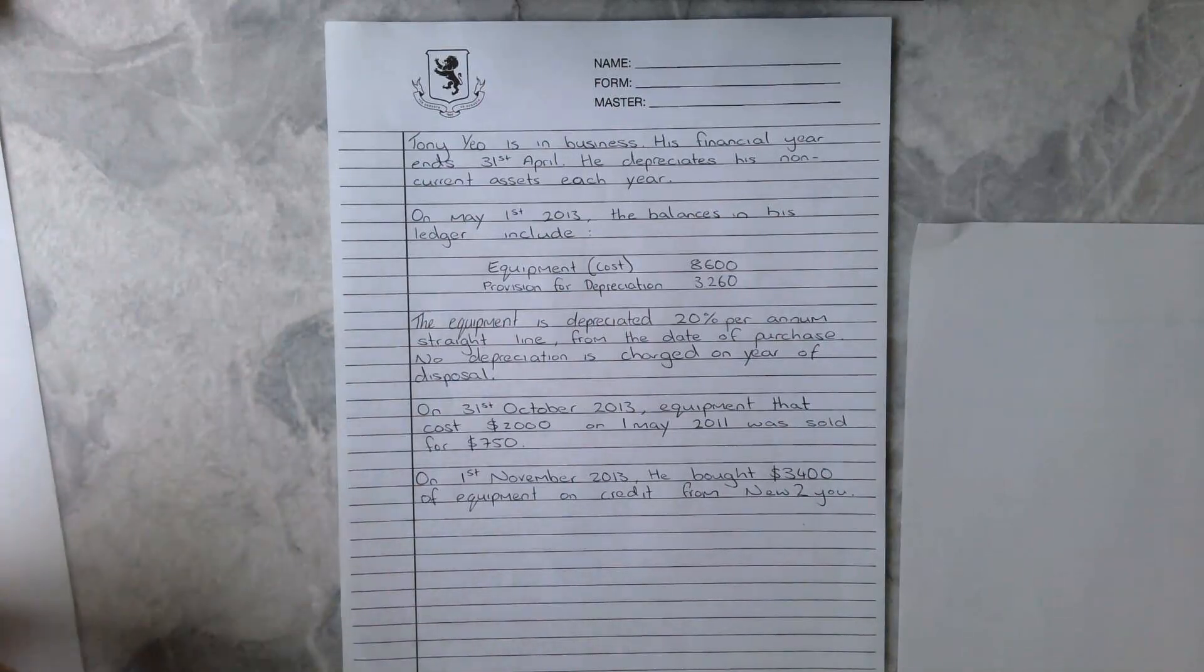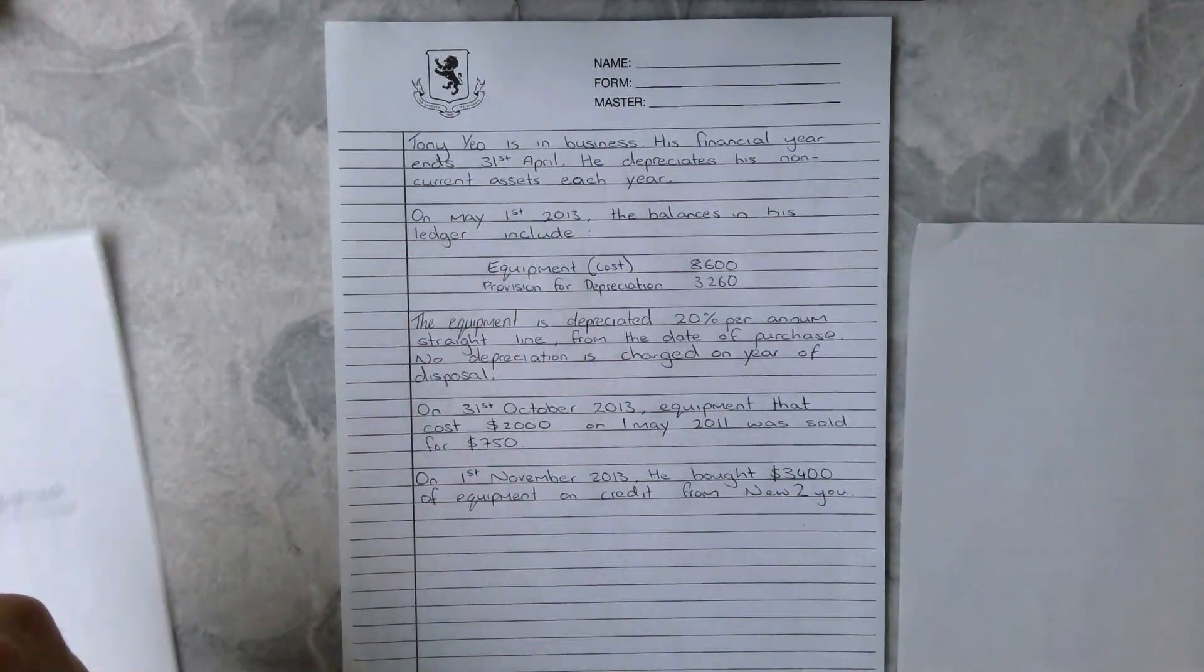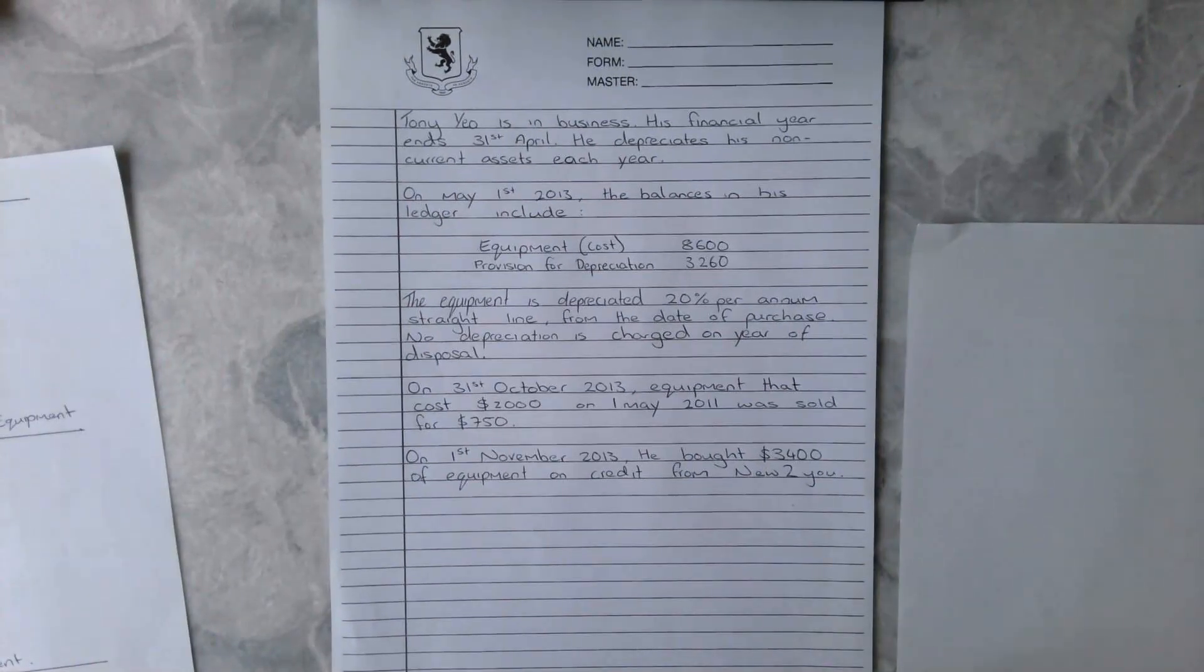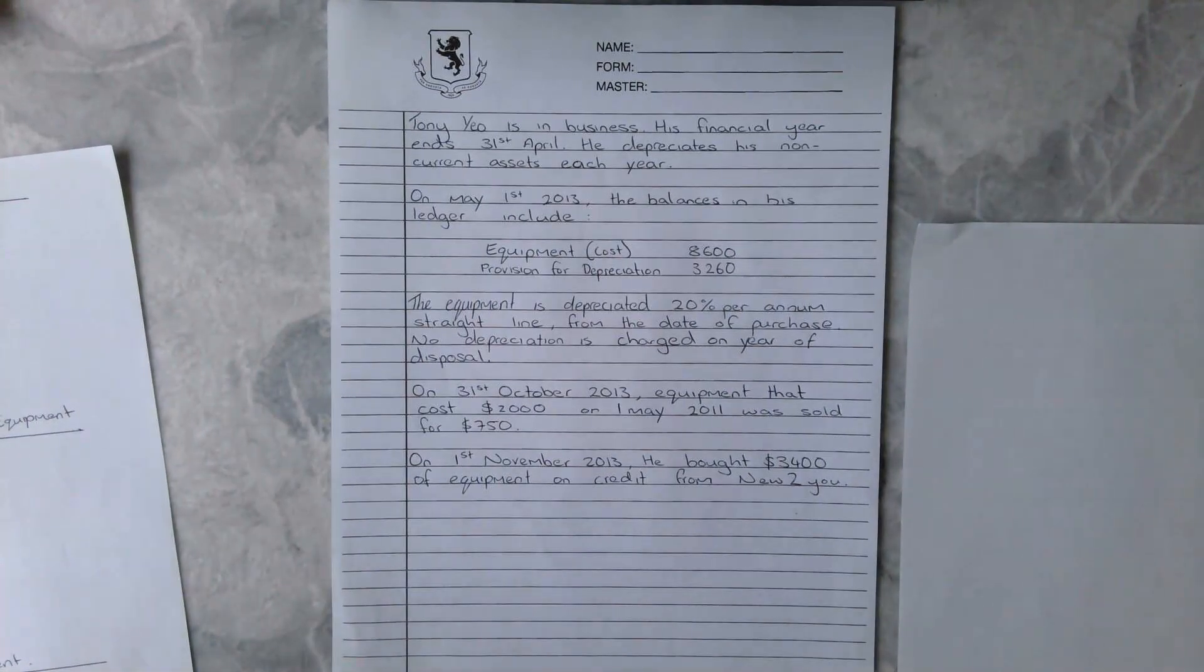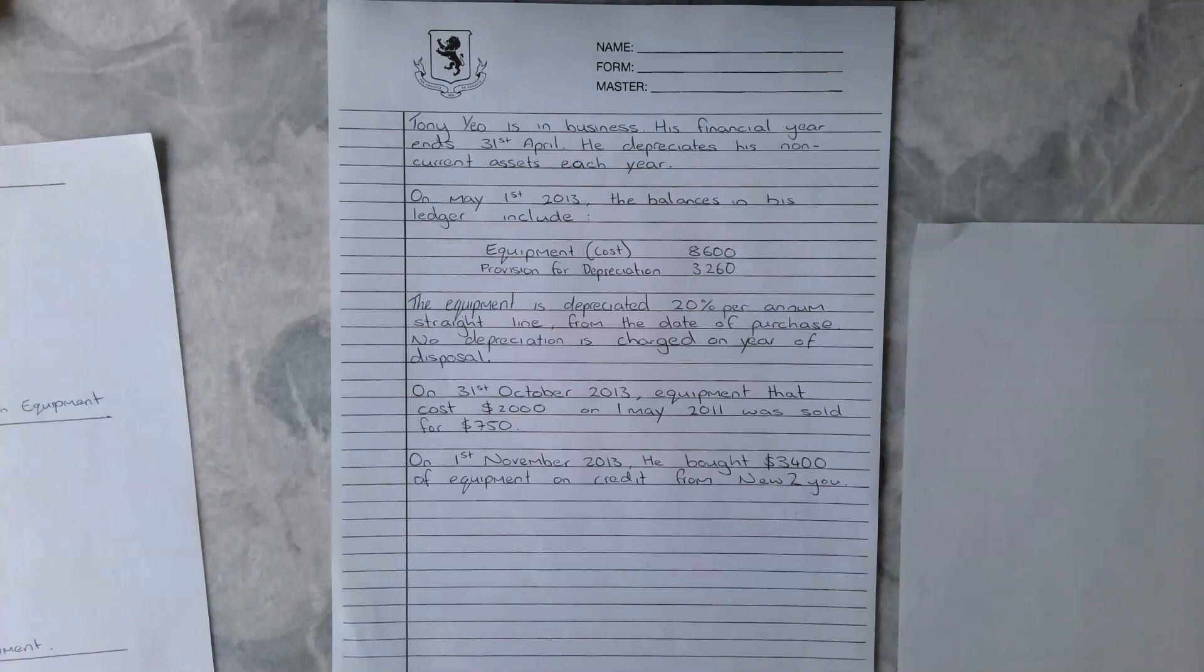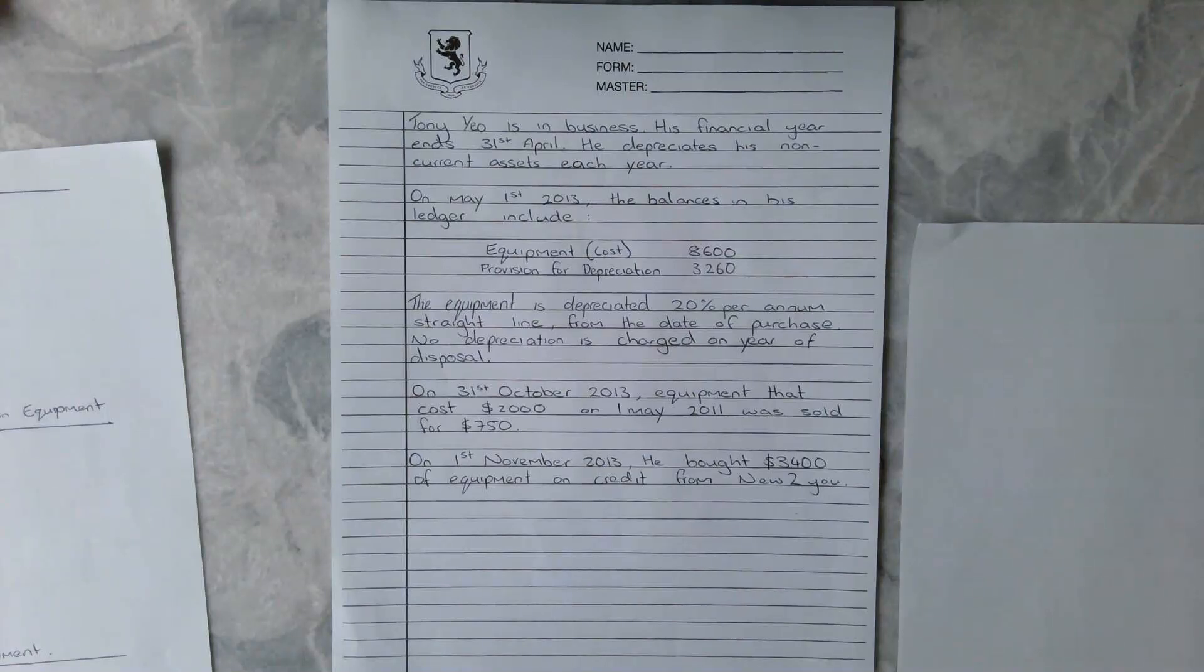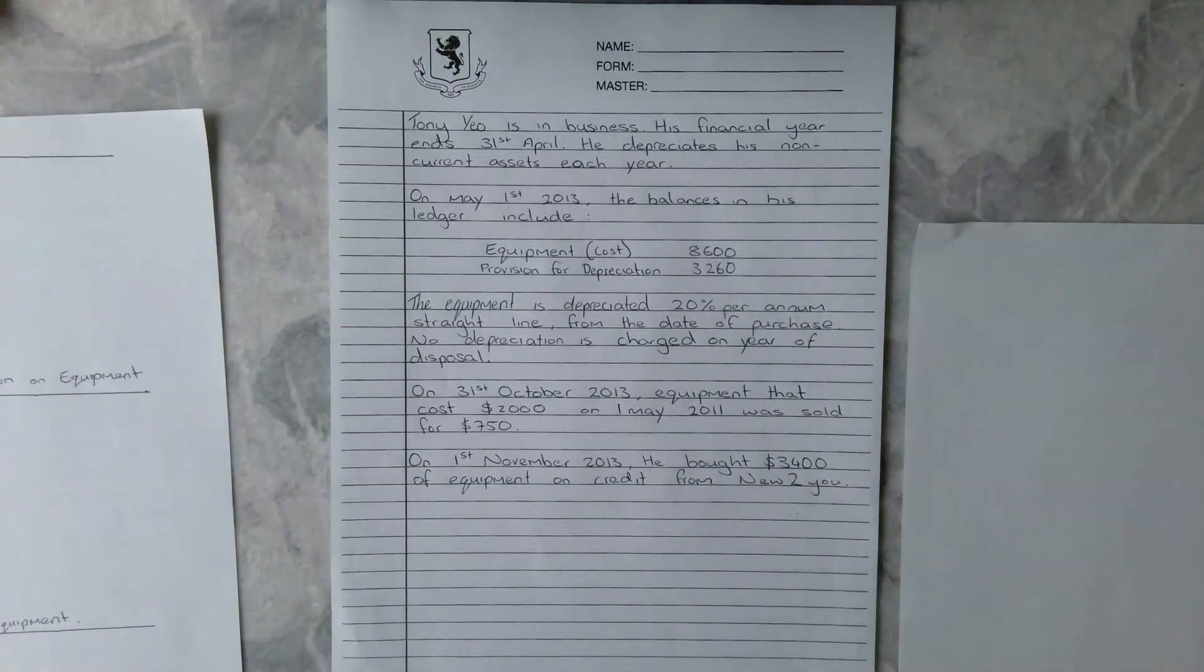He depreciates his non-current assets every year and his balances on the 1st of May 2013 were $8,600 and his provision for depreciation was $3,260. The equipment is depreciated 20% per annum straight line from the date of purchase. No depreciation is charged in the year of disposal. On the 31st of October 2013, equipment that cost $2,000 on May 1st 2011 was sold for $750. Then on the 1st of November 2013, he bought equipment worth $3,200.